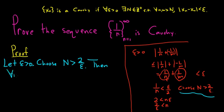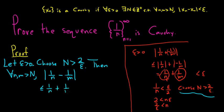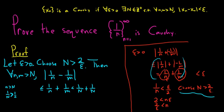Then for all little n and little m bigger than capital N, we look at the absolute value of the difference between 1 over n and 1 over m. This is less than or equal to 1 over n plus 1 over m. Now, little n is bigger than big N, so 1 over big N is bigger than 1 over little n — in other words, 1 over little n is less than 1 over big N. So this is less than 1 over big N plus 1 over big N, and the same is true for little m because it's also bigger than big N.